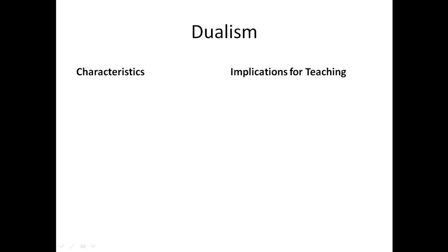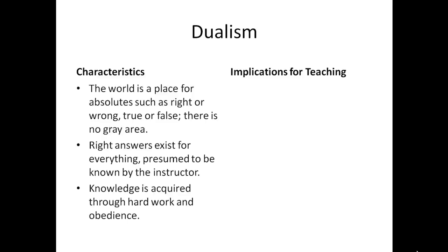Perry's first stage is labeled dualism. Some characteristics of the dualism stage: the world is a place of absolutes such as right and wrong, true or false — there's no gray area, correct or incorrect. Right answers exist for everything, but they're presumed to be known by the instructor.